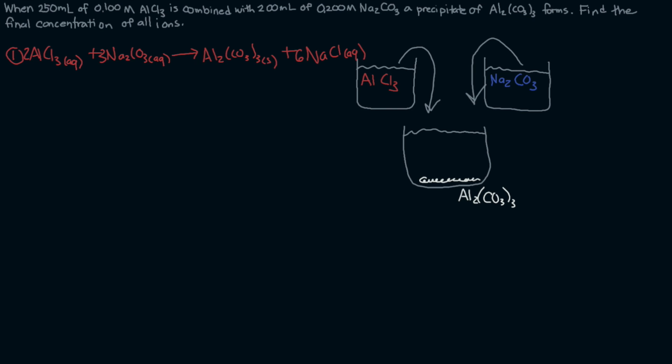If we split it up into the ions we can see better what's happening here. So here we have aluminum ions, chloride ions, and sodium ions, and carbonate ions. And that produces, now here we're not going to separate these because this is actually creating a solid. So we're going to leave that in the solid form.